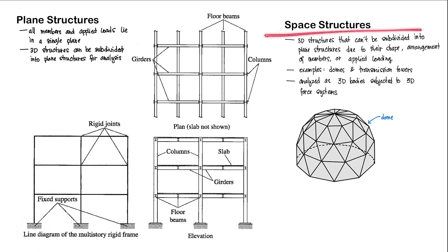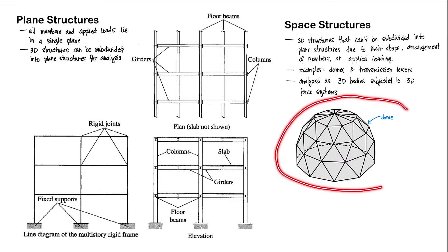So let's proceed to our space structures. Space structures are 3D structures that cannot be subdivided into plane structures due to their shape, their arrangement of members, or the applied loadings. An example of this would be domes and transmission towers. The analysis of 3D bodies subjected to a 3D force system could be a bit complicated, especially for this type of space structures. This is usually done at a graduate school level, but we will be doing some 3D analyses for space structures later on in our discussions.